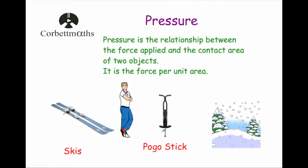Whereas on a pogo stick, whenever he stands on it, his weight — the downward force — is concentrated on a very small area. So he's going to sink down into the snow because there's a very high pressure.